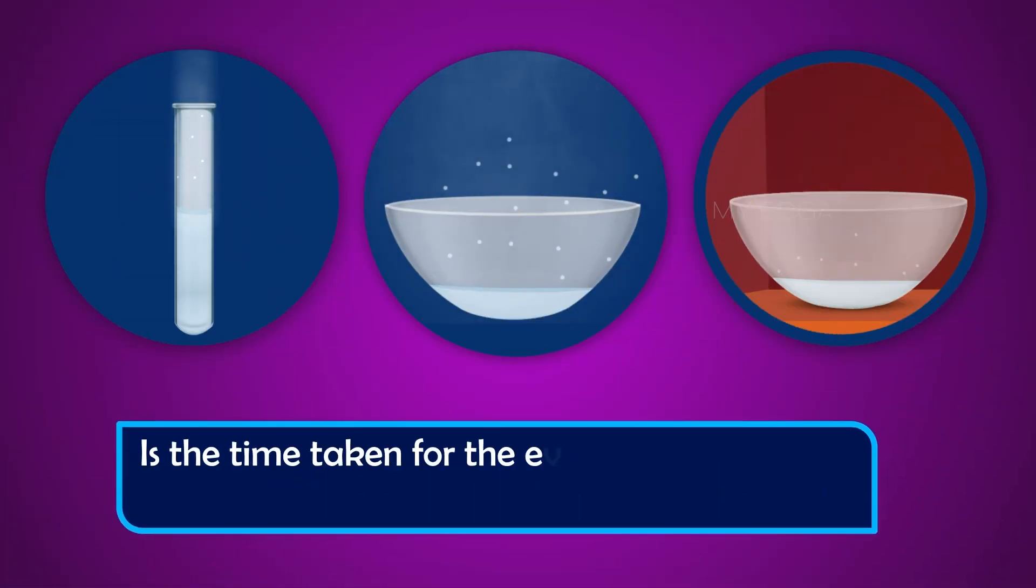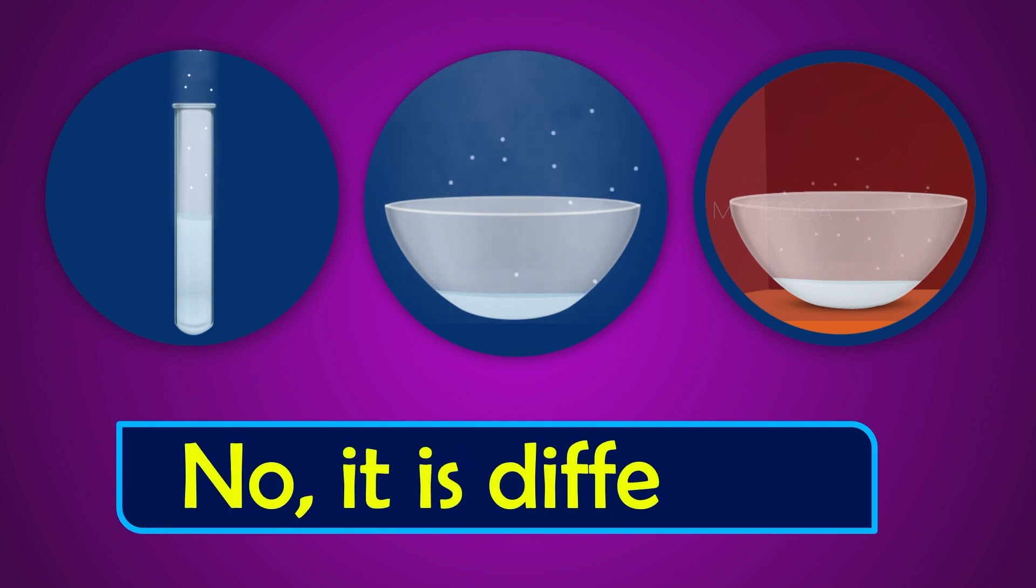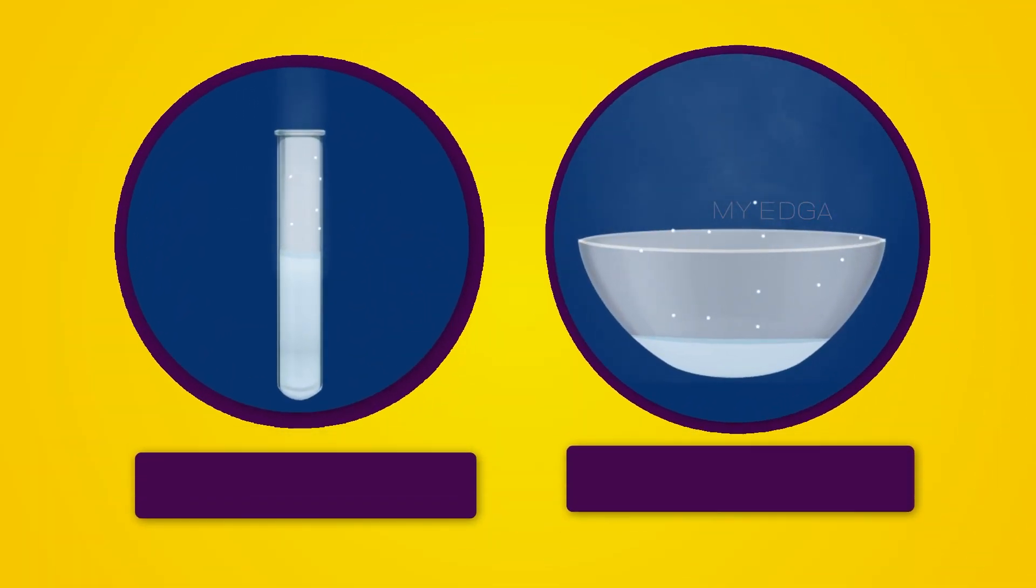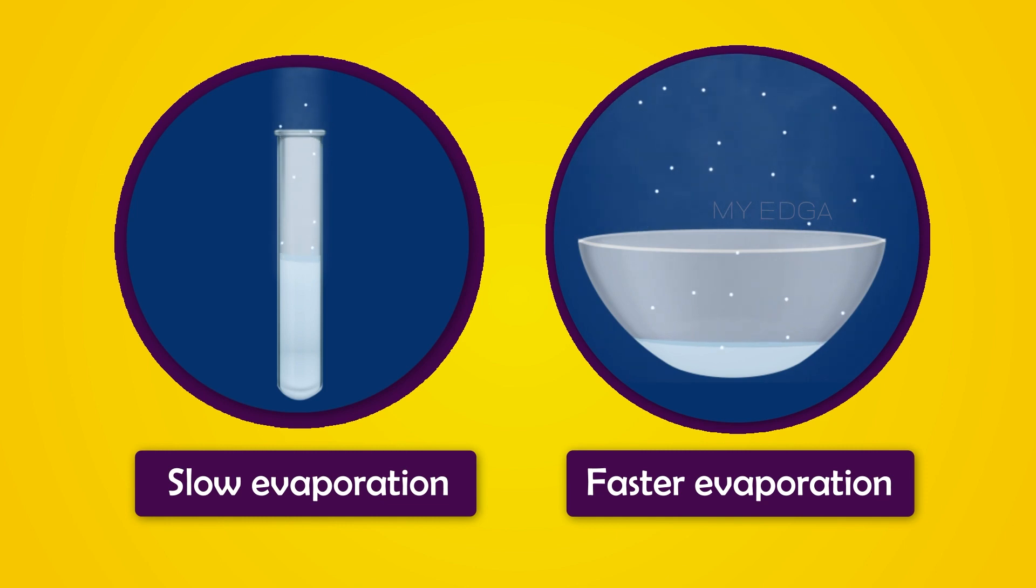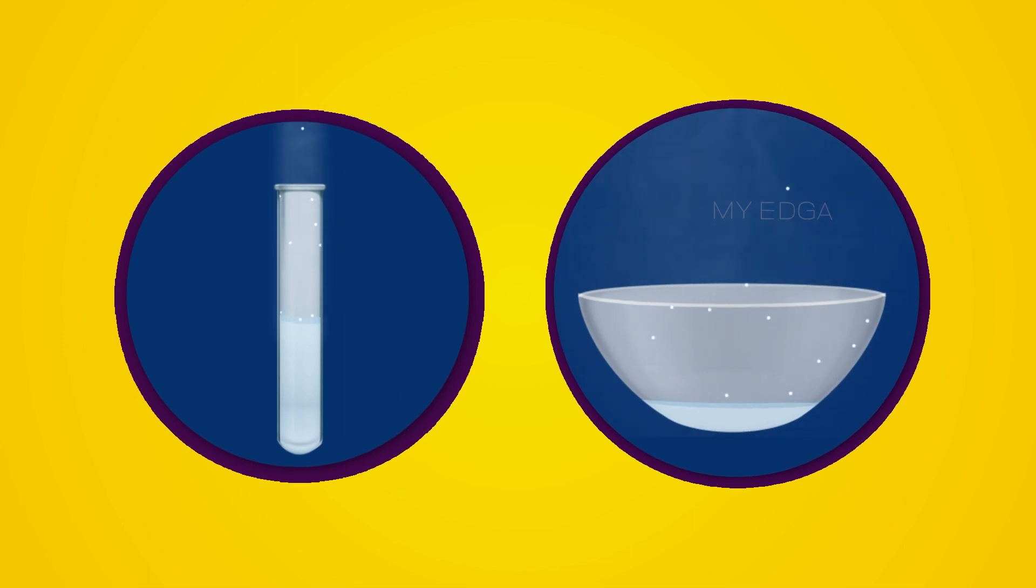Is the time taken for the evaporation of water the same in all cases? No, it is different. Water kept in china dish under fan evaporates faster as compared to the water in the test tube.